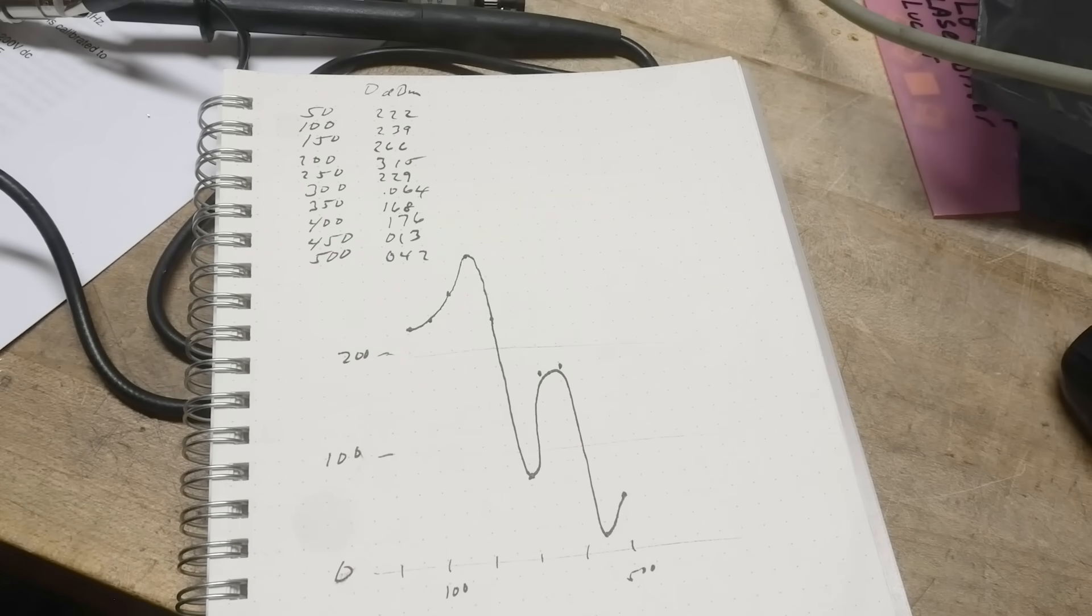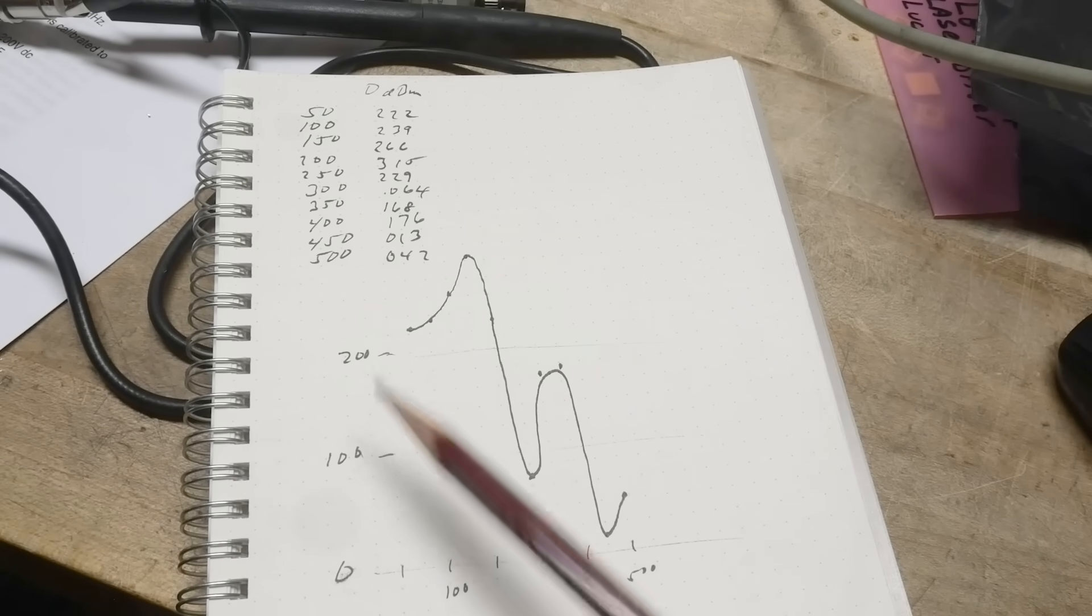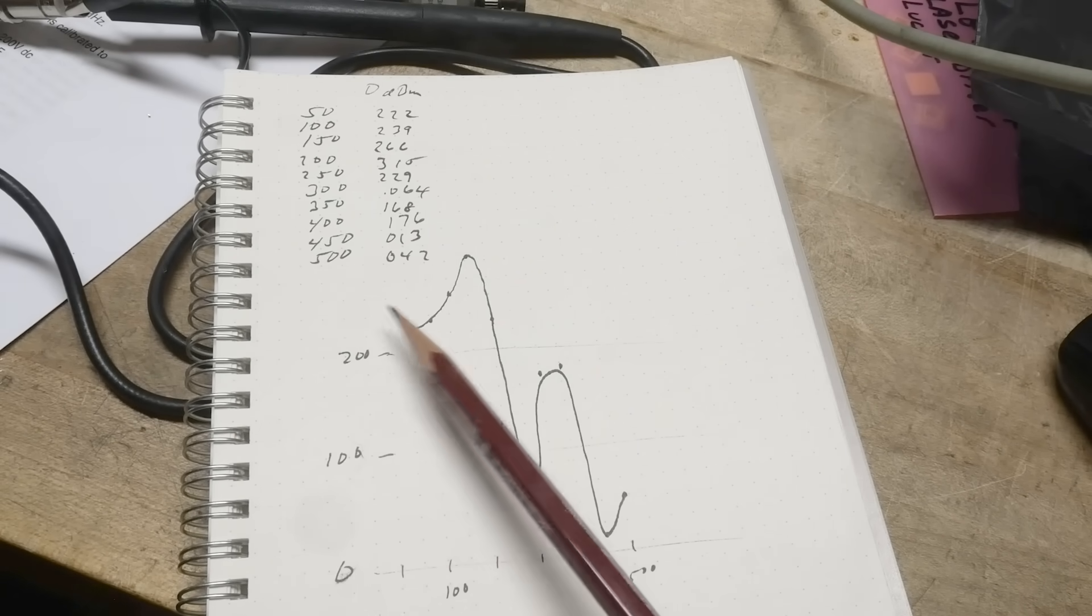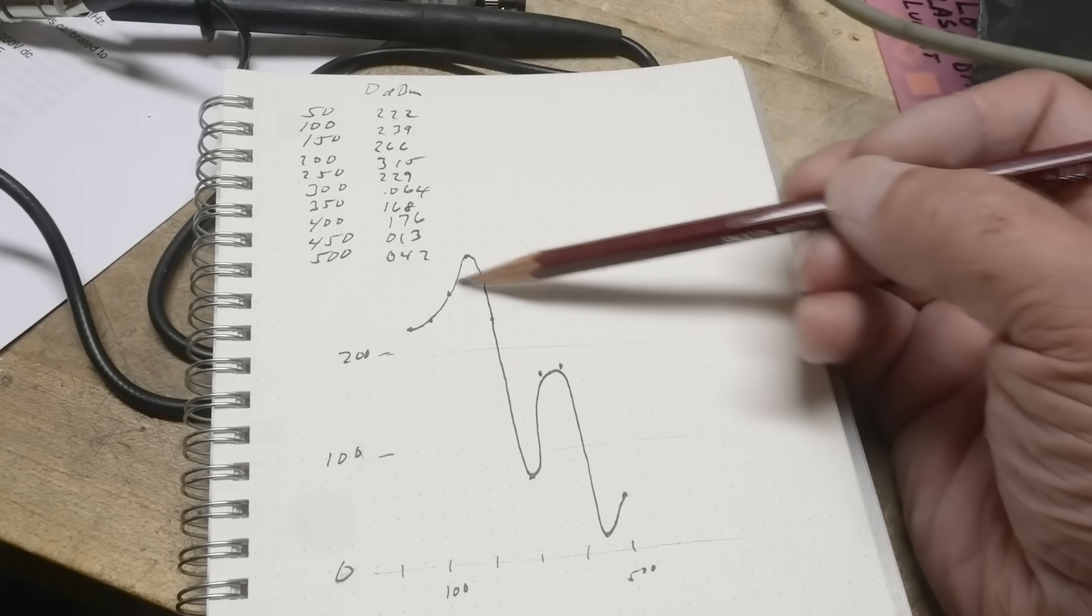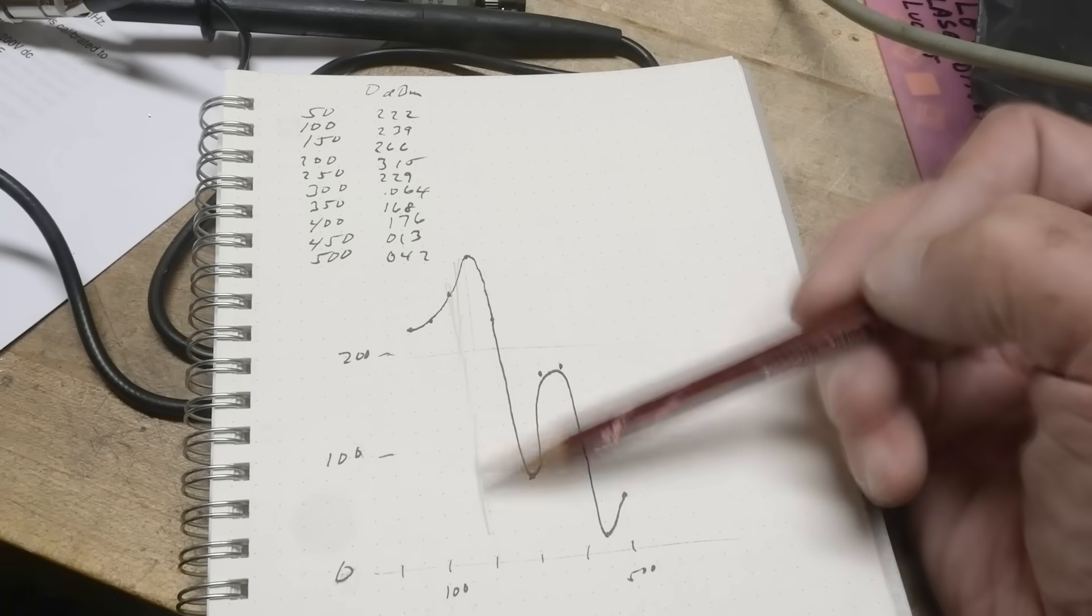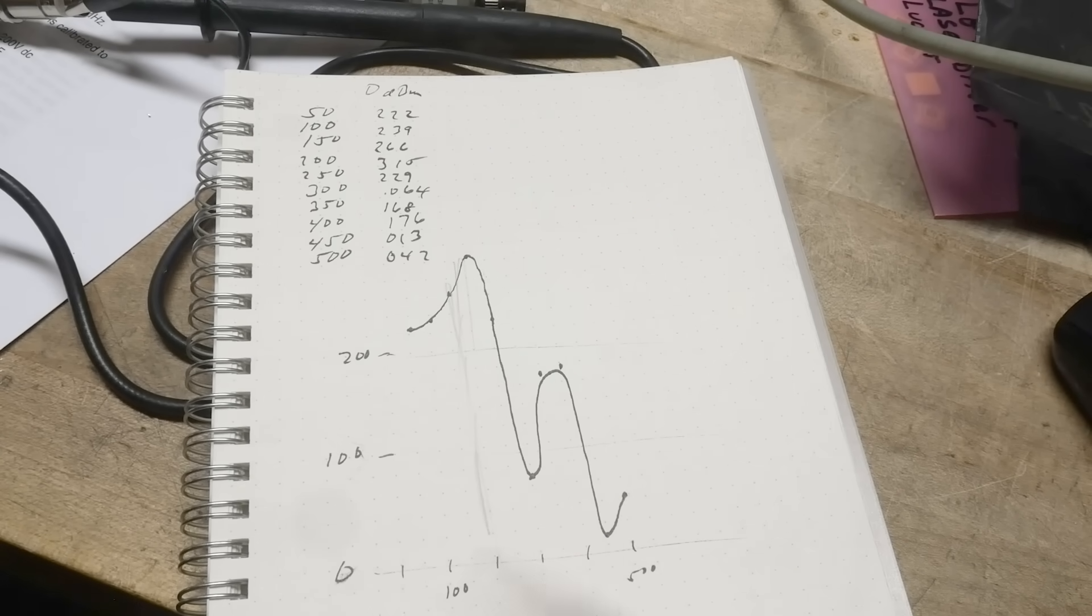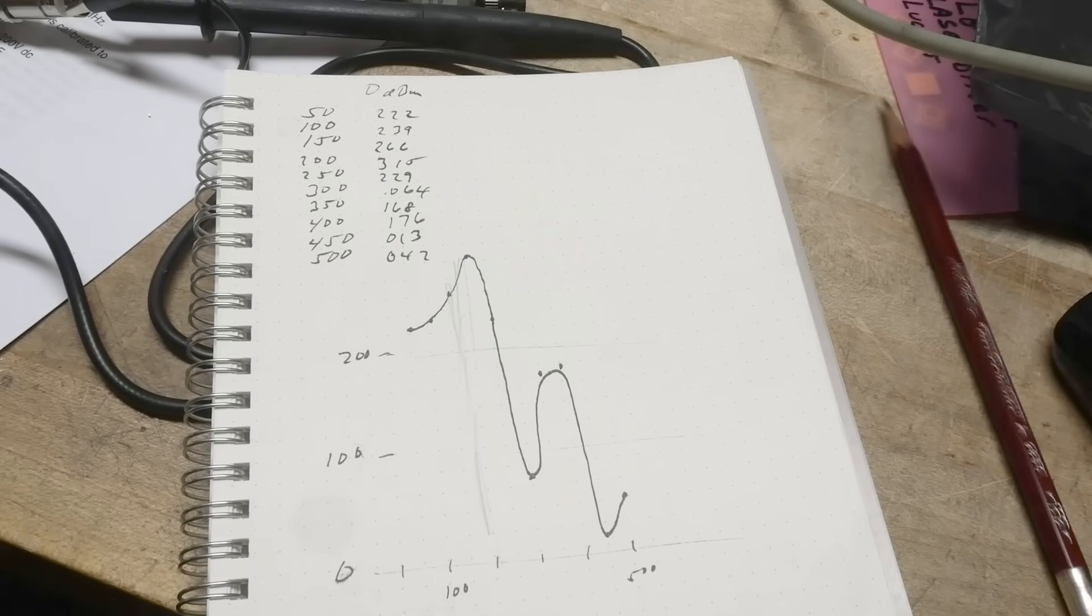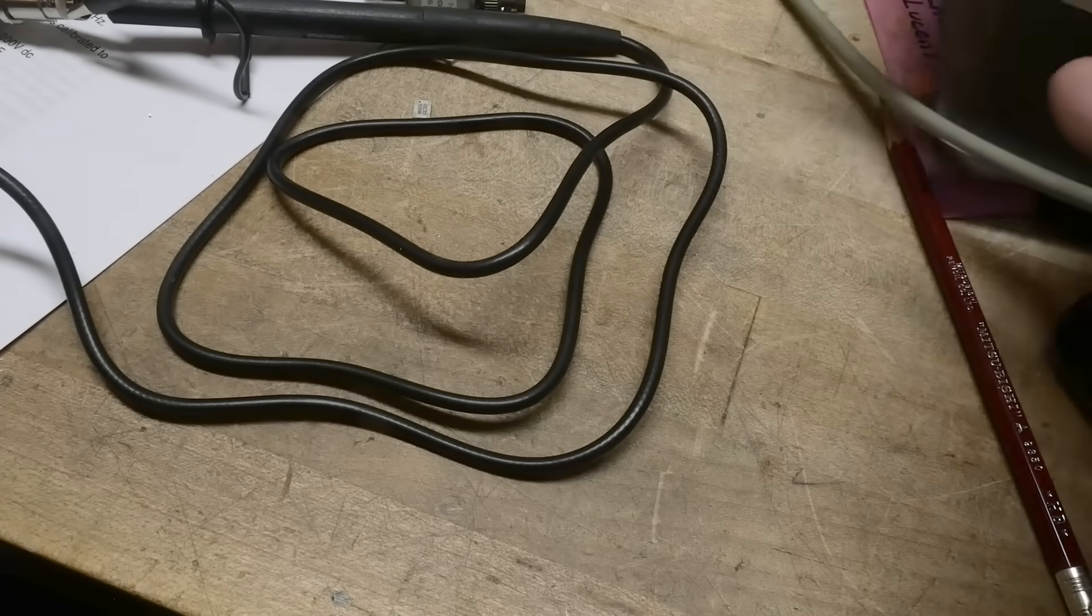Earlier I made these measurements from 50 to 500. And here's 0 volts, 100 millivolts, 200 millivolts. So, and here's 200. So this is kind of the range I say it's good. And then it just goes wacky above 200. So yeah, it just does weird stuff. So I don't know. Seems kind of strange to me.